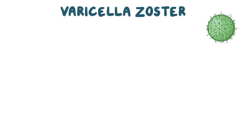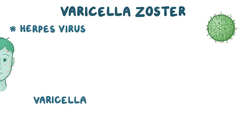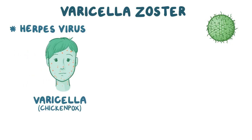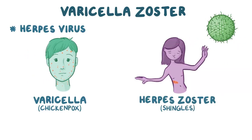Varicella zoster virus is one of the herpesviruses, and it causes two diseases: varicella, or chicken pox, and herpes zoster, also known as shingles. Zoster actually refers to a type of belt used by ancient Greek warriors, because of the belt-like appearance of shingles.